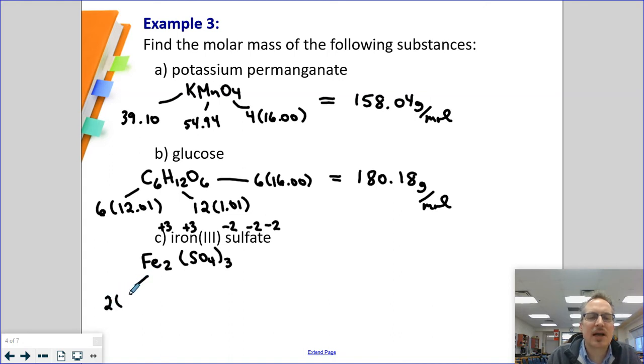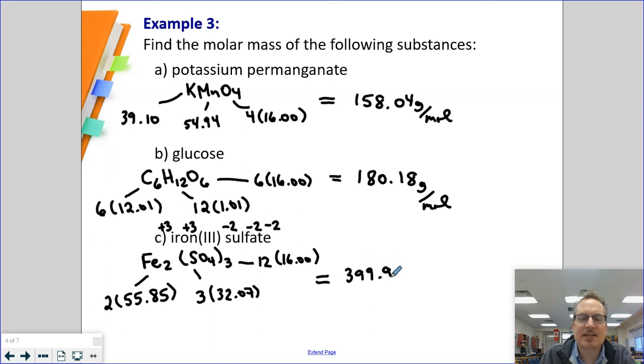This is going to be 2 times 55.85 for iron. This is going to be 3 times, and for sulfur, it's 32.07. And then 3 groups of SO4 would be 12 oxygens, each at 16. When we add all this up, it's going to be 399.91 grams per mole. That's a very, very big number. Hopefully, you got those right.